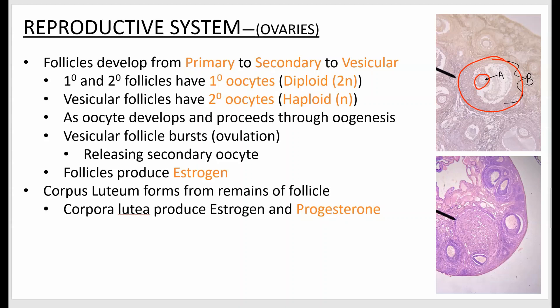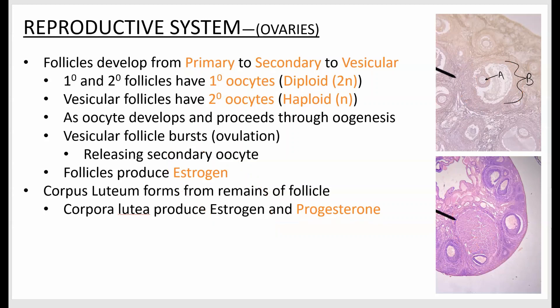Once the oocyte is released, the follicle becomes a dense solid mass called a corpus luteum, which begins to produce an additional hormone called progesterone. So the follicle already made estrogen, and once it becomes a corpus luteum, it continues making estrogen and also produces this new hormone, progesterone.